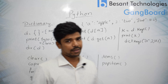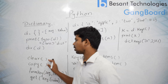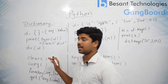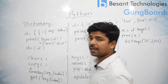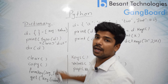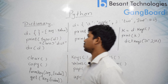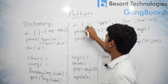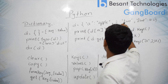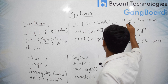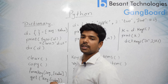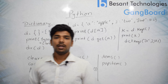So let us see each of these in brief. The clear function, as you might understand, will clear all the values and return an empty dictionary. Here I have a dictionary d with key 'a' and value 'apple', key 2 and value 2, key 'float' and value 10.2.